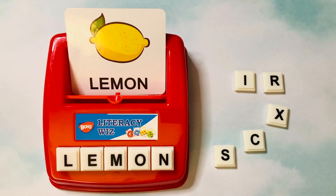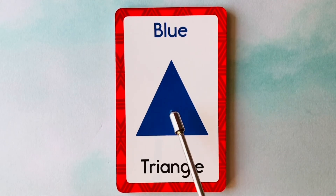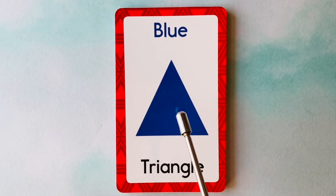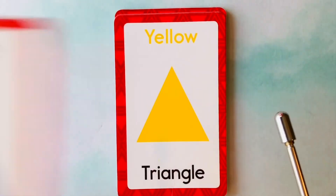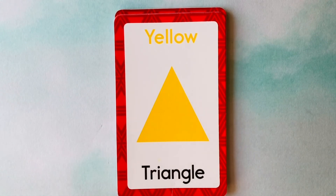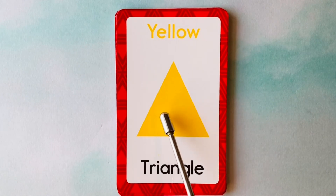You did a great job learning to spell new words today. Let's learn shapes and colors. This is a triangle. What color is this triangle? It's a blue triangle. This is also a triangle. What color is this triangle? It's a yellow triangle. This is a yellow triangle.